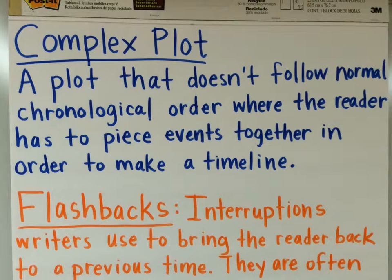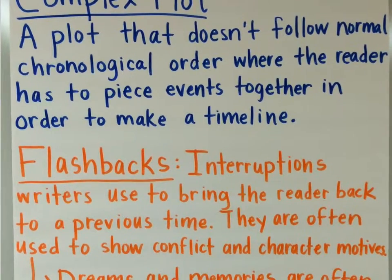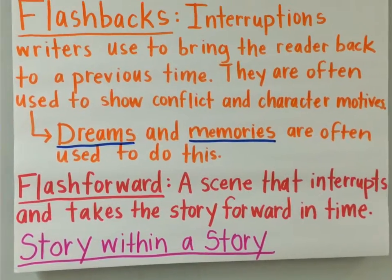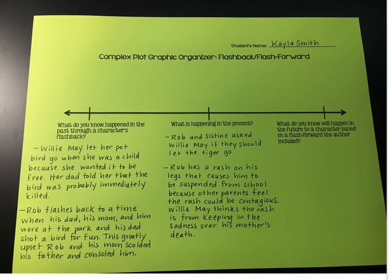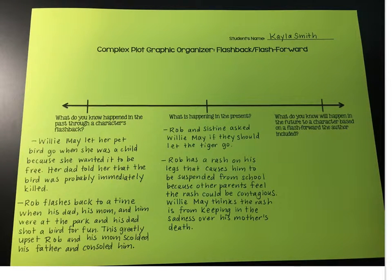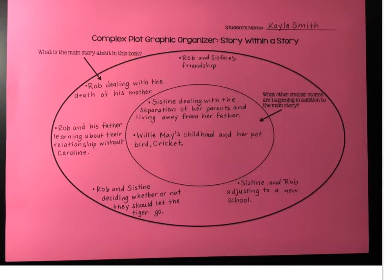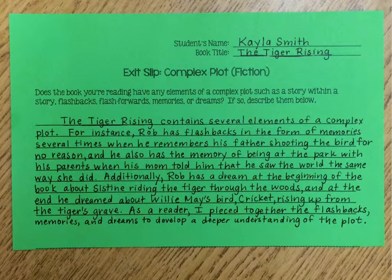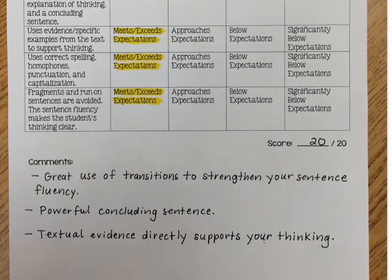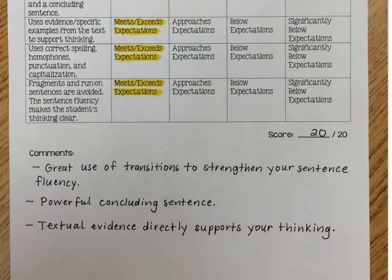Included with each mini-lesson sequence is an anchor chart that I've written up as an example you could use or modify in your own language arts classroom. Also included are the graphic organizers filled out to give you and your students an idea of what they could look like. And also included is a sample response on the exit slip that can be used as a model to show students what a model response would look like, as well as a sample of the rubric with example comments.